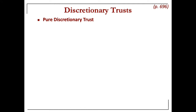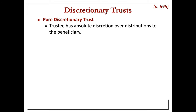There are different types of discretionary trusts, and they differ based on how much freedom they give the trustee to withhold these distributions or to decide when and how much to give. A pure discretionary trust is when the trustee has absolute discretion over distributions to the beneficiary — the trustee can decide how and when to provide distributions.